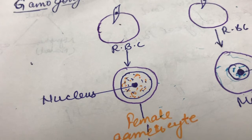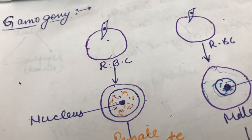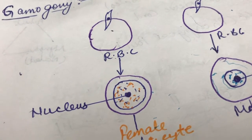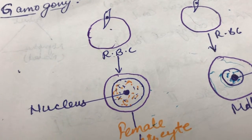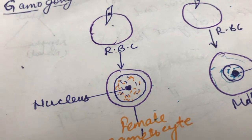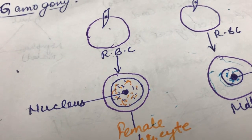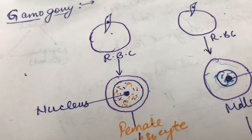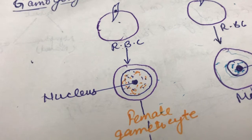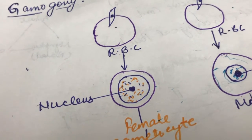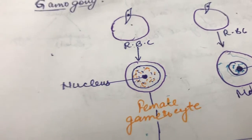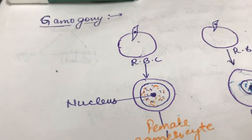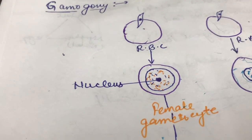That was divided into pre-erythrocytic and erythrocytic phases. Then Gamogony starts in human being and is completed in the mosquito. And then the last phase Sporogony starts in human being and is completed again in the mosquito. This is very interesting.